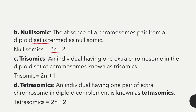The third condition is trisomic — an individual having one extra chromosome in the diploid set, expressed as 2n plus 1. The fourth type is tetrasomic — an individual having one pair of extra chromosomes in the diploid set, expressed as 2n plus 2.